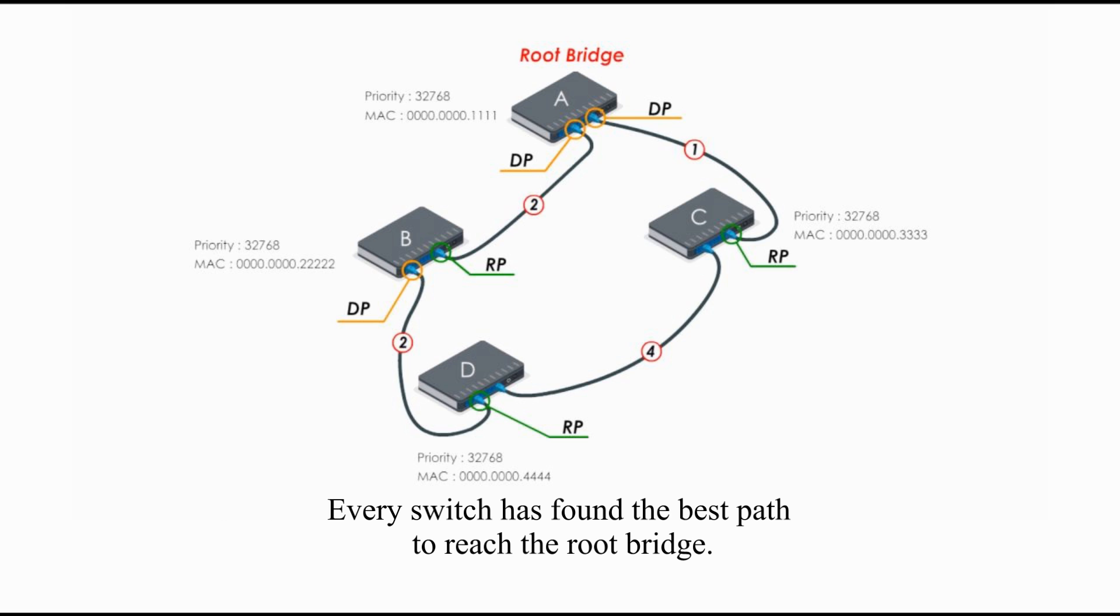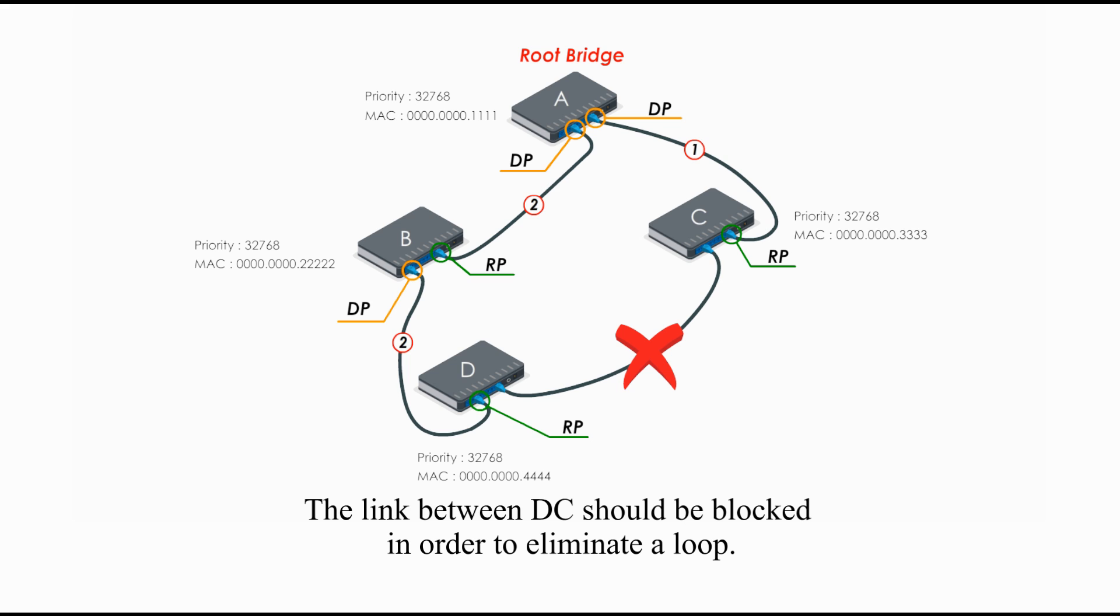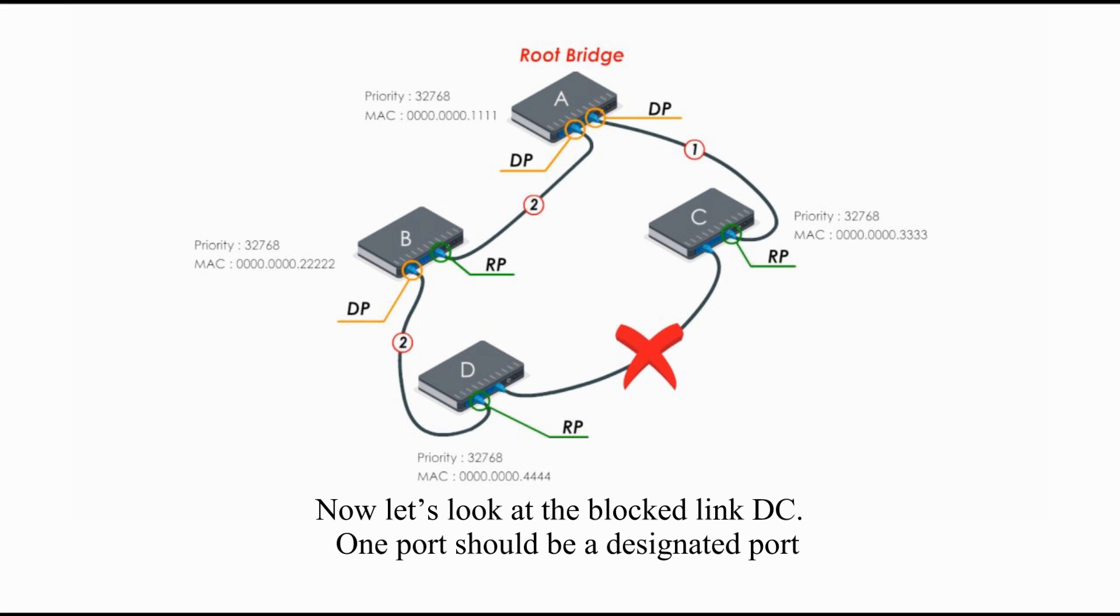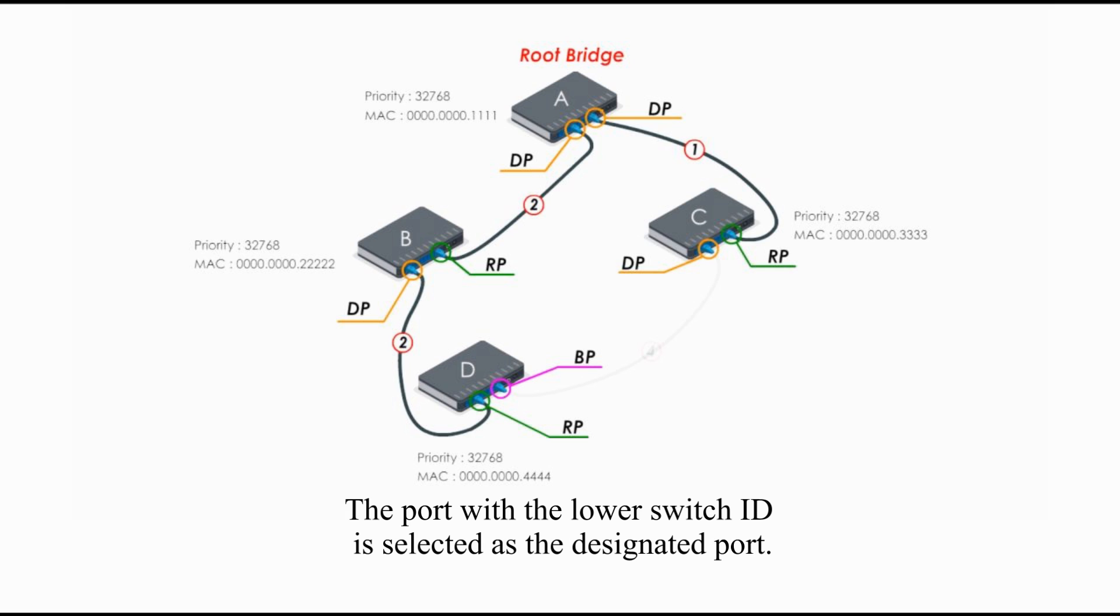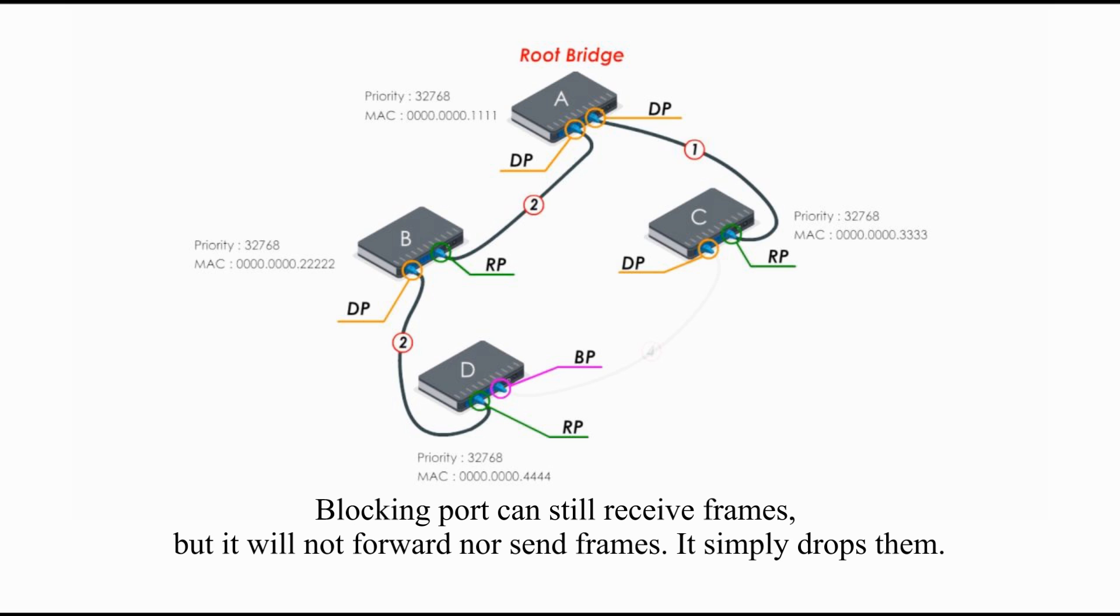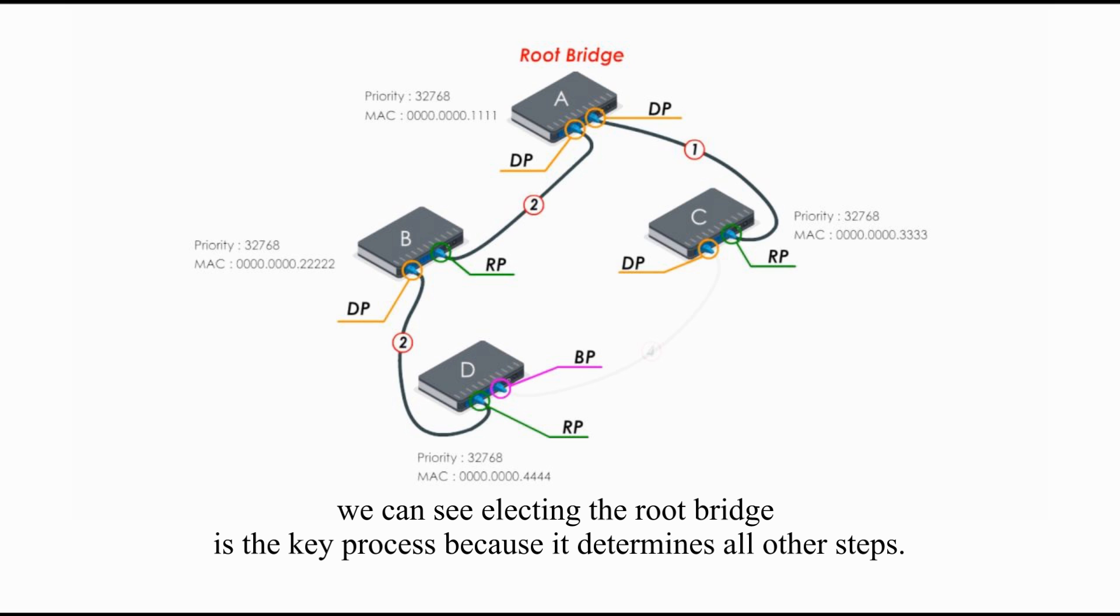We are done. Every switch has found a best path to reach the root bridge. The link between DC should be blocked in order to eliminate a loop. Now, let's look at the blocked link DC. One port should be designated port, and the other end should be in a blocking state. The port with the lower switch ID is selected as a designated port. Therefore, the other end is blocking port. The blocking port can still receive frames, but it will not forward nor send frames. It simply drops them.